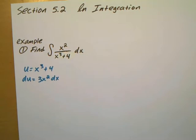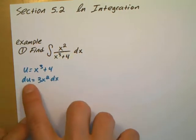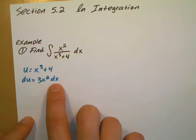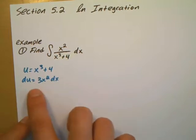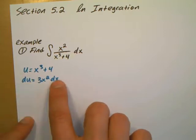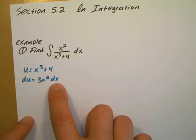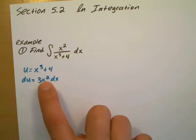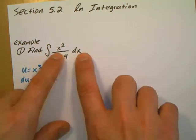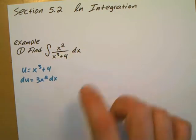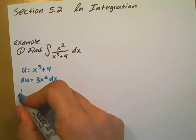The derivative du is going to be 3x squared dx. Hopefully by now you've done enough u sub problems that you recognize that this derivative, the du dx, you're going to multiply this dx over, so you can skip that step. I'm just going to write it there from now on. Now I have x squared and dx in the other part of the problem. What I don't have is this 3, so I'm going to divide, so it's 1 third.